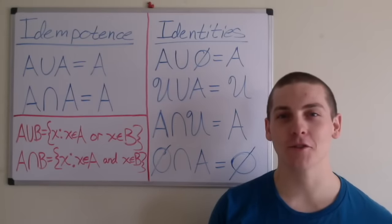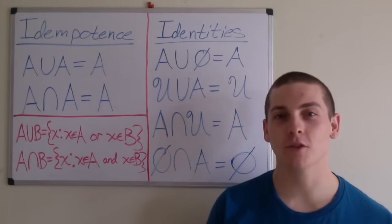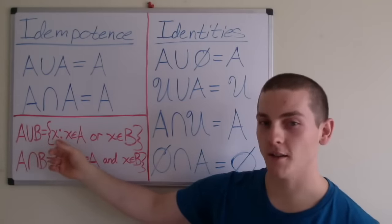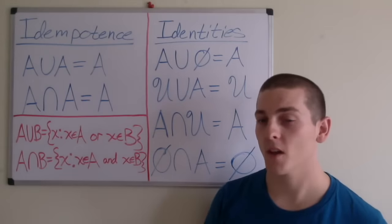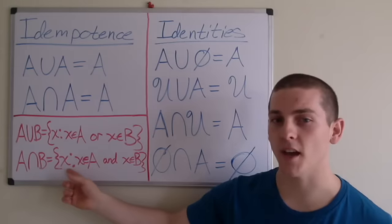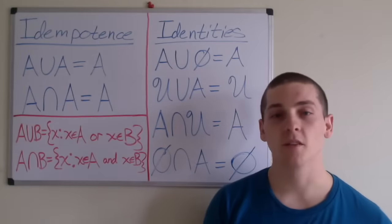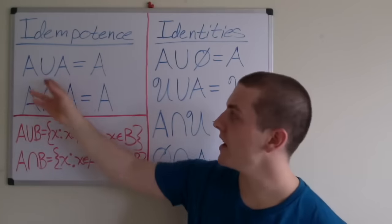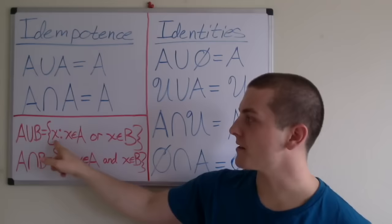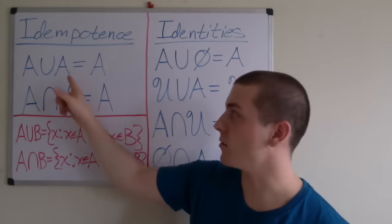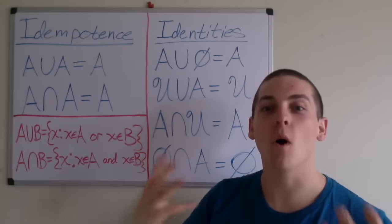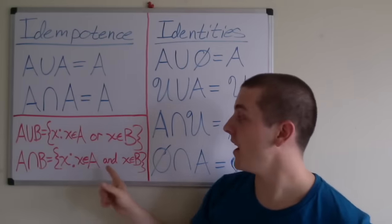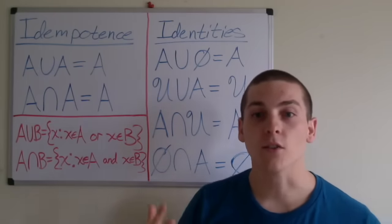I want to begin this video by reviewing our definitions of the union and intersection, after which I'll be introducing two algebraic laws for sets. A union B equals the set containing elements x such that x is an element of A or x is an element of B. A intersection B is defined as the set containing elements x such that x is an element of A and x is an element of B. So when I introduce the idempotence law, it should be clear that A union A equals A, because A union A is the set containing elements x such that x is an element of A or x is an element of A. Also, A intersection A equals the set containing elements x such that x is an element of A and x is an element of A, which also equals A.